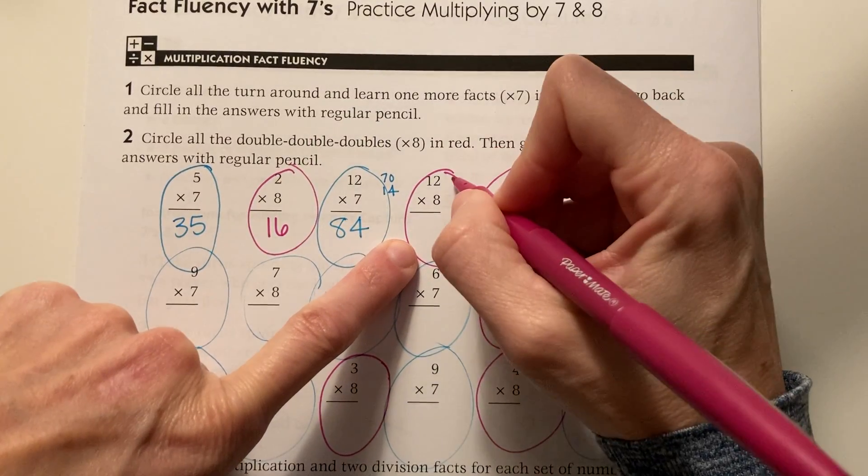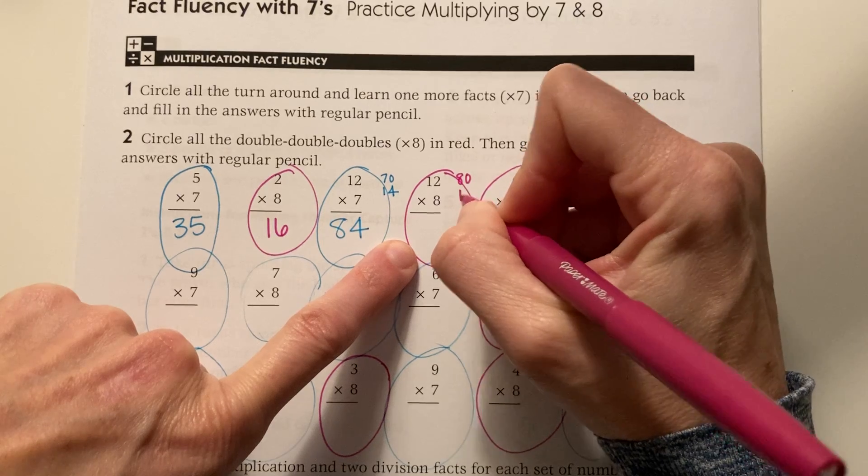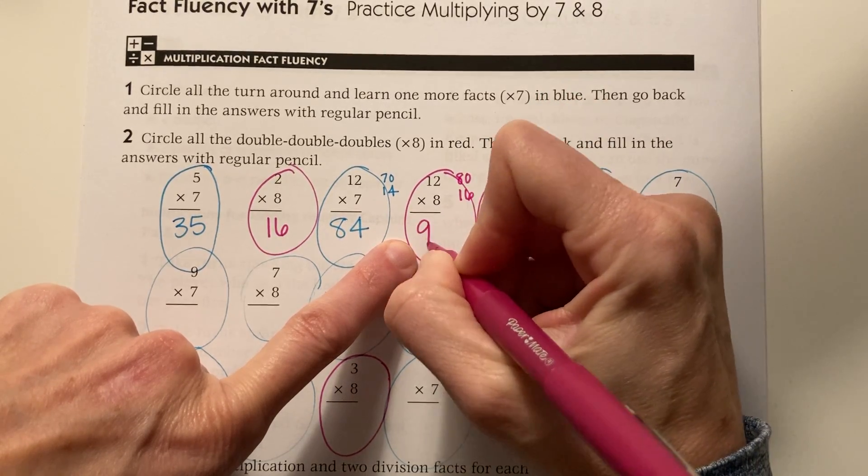Twelve times eight. Ten times eight is eighty. Two times eight is sixteen. If I add those up, I get ninety-six.